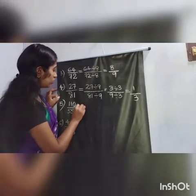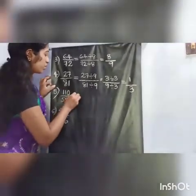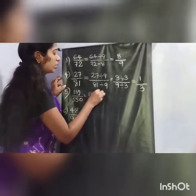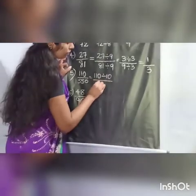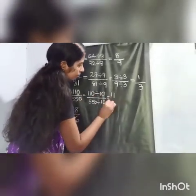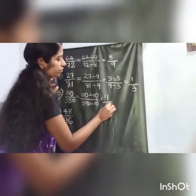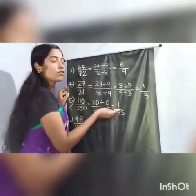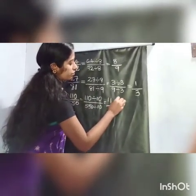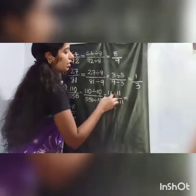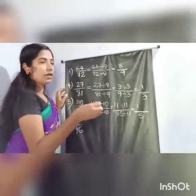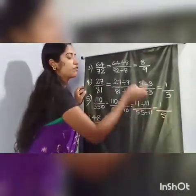Next example: 110 divided by 550. We divide both numerator and denominator by 10. 110 divided by 10 is 11, and 550 divided by 10 is 55. This is not the simplest form because they have a common factor. So we divide both by 11. 11 divided by 11 is 1, and 55 divided by 11 is 5. Now 1 and 5 have no common factor other than 1, so the fraction 1 by 5 is the simplest form.